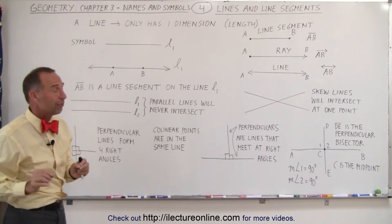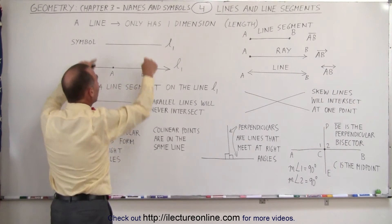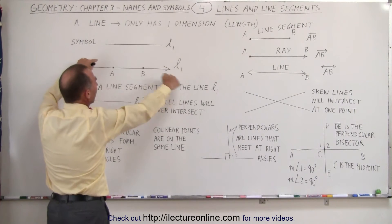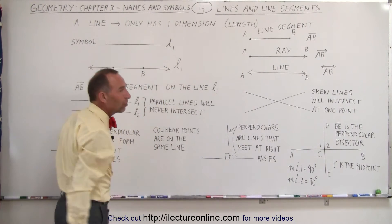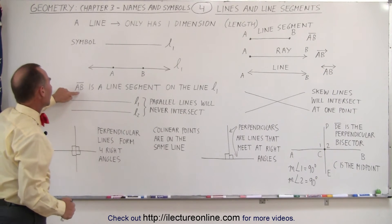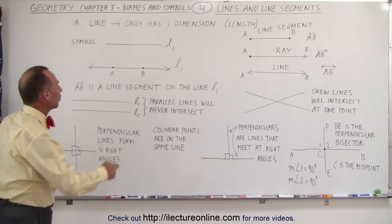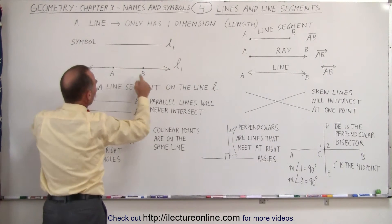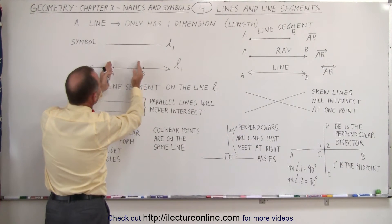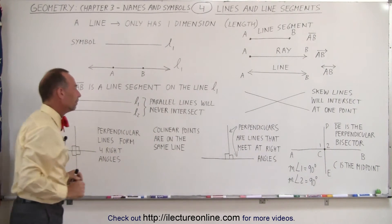Now, usually a line is defined by two points. All you need is two points anywhere on a plane. You draw a line between those two points, and that defines the direction of the line. Here we have AB is a line segment on the line L1. So when we write this like this, we can say that this piece of the line between A and B can be considered a line segment on the entire line L1.